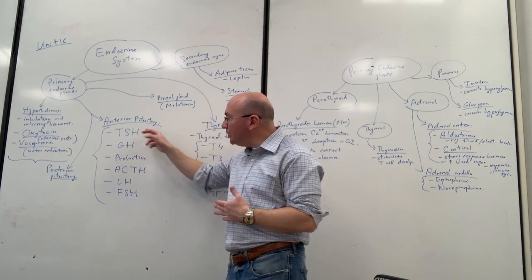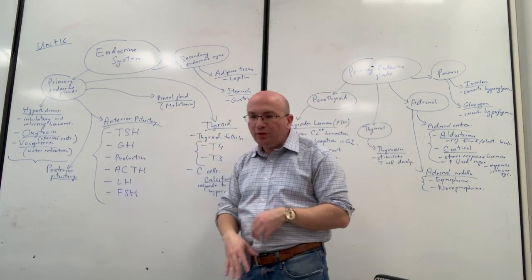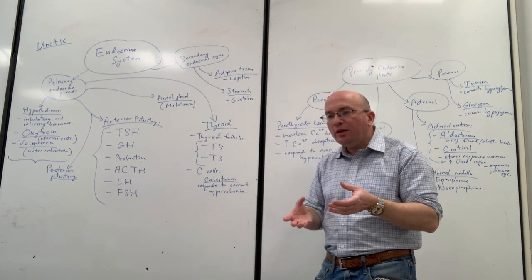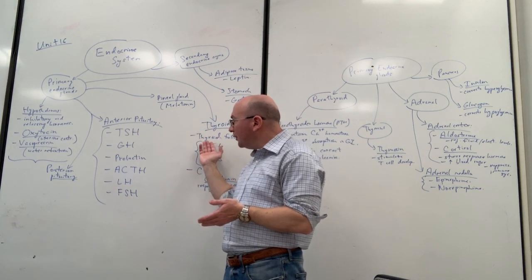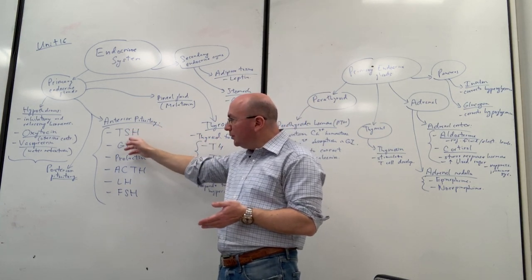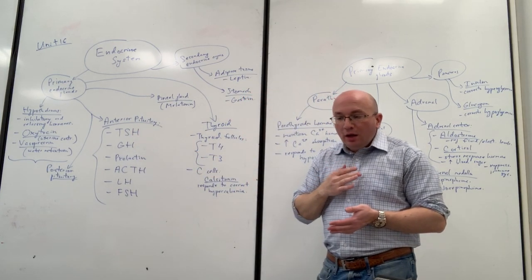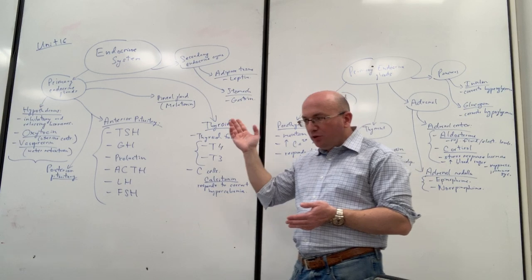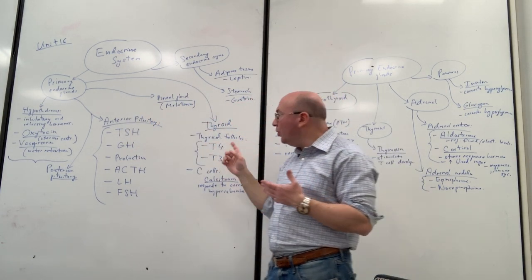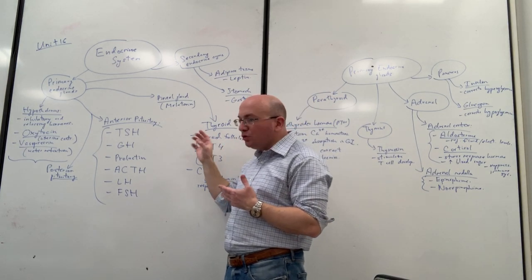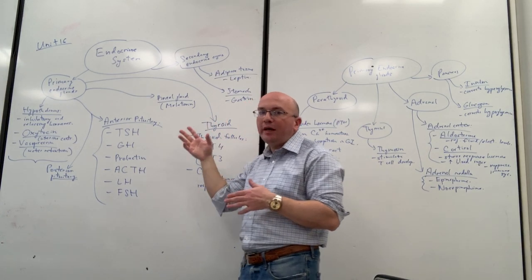We're going to talk about the thyroid soon, but essentially, in order to tell the thyroid what to do, TSH needs to be released first to stimulate the normal production of thyroid hormones. We do not want our glands on their own to decide what to do — they rely on the brain, the pituitary, and the hypothalamus. When the thyroid needs to function and release its hormones, TSH must be released first to go to the thyroid, and then the thyroid does its job.